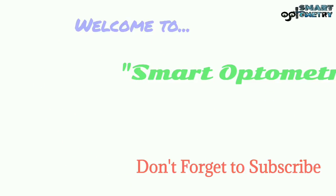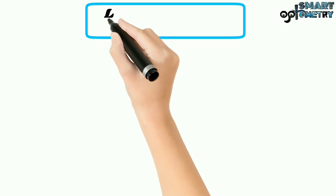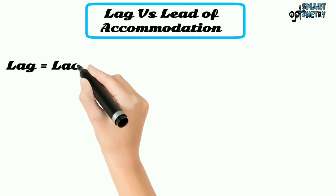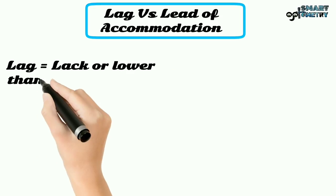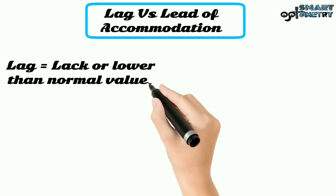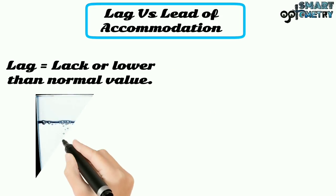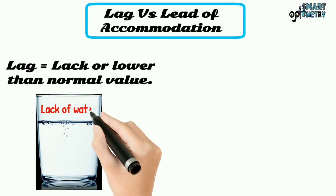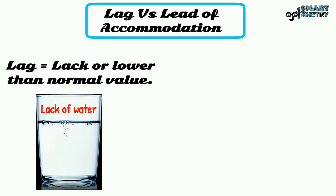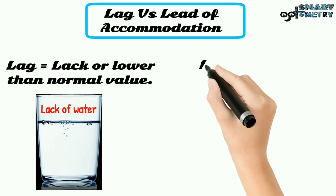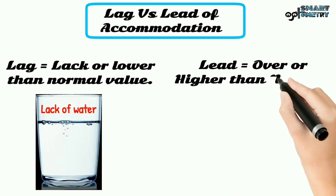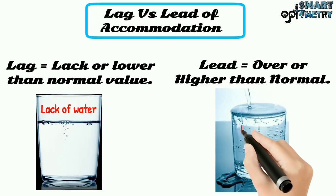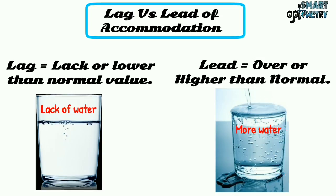Today I will discuss lag and lead of accommodation. The word lag means lower than the normal value. In this figure you can see in the glass we have less water than it normally accumulates. Lead means higher than normal limits — in this figure you can see we have more water than it normally accumulates.